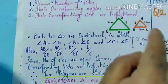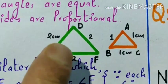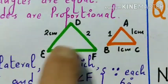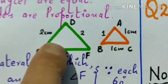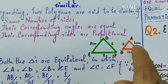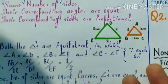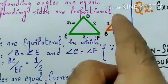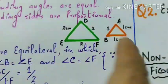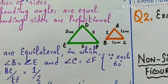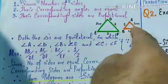इसके लिए मैंने नीचे दो triangles बनाई हैं — दोनों equilateral हैं। एक triangle है ABC, इसके हर एक side 1 cm है। दूसरी triangle है DEF, इसकी हर side 2 cm है। पहला point — number of sides: यहां भी 3 sides हैं, यहां भी 3 sides हैं — same number of sides। दूसरा: corresponding angles equal — यहां भी हर angle 60°, यहां भी हर angle 60° — corresponding angles are equal। So we can declare these two polygons are similar।